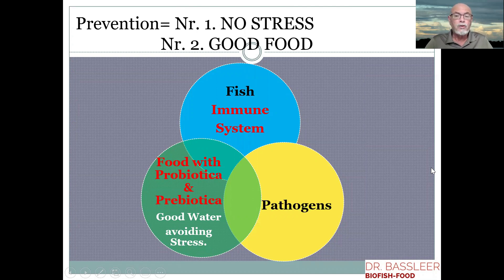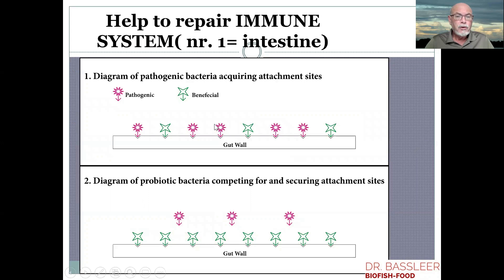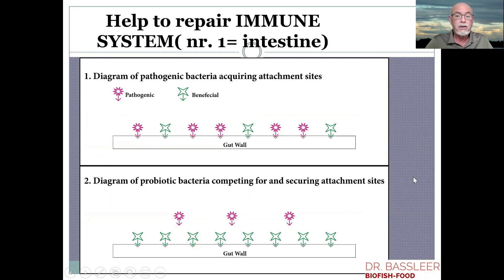The innate immune system is already there and works immediately, protecting the fish on the skin against bacteria and parasites. Prevention is about avoiding stress and giving good food with probiotics and prebiotics, and providing good water so pathogens have no chance. The most important immune organ is the gut. We can help repair the immune system after stress or bad transport by introducing beneficial bacteria along the gut wall, which compete against pathogenic bacteria and deny them attachment sites — that's first-line defense.